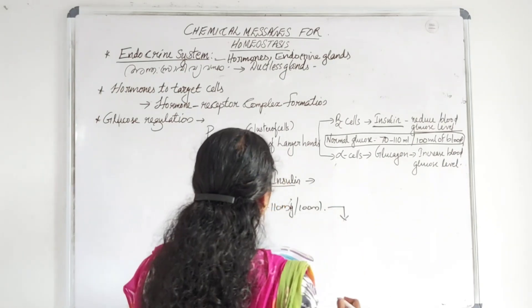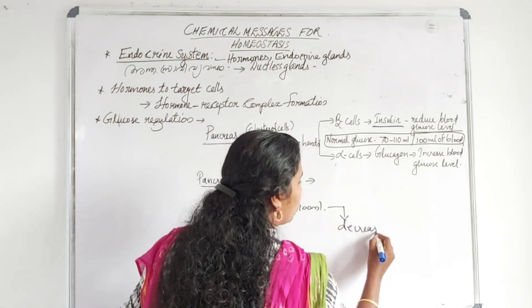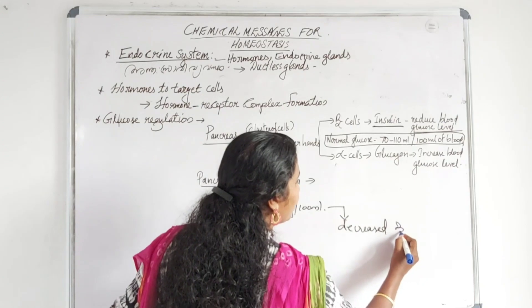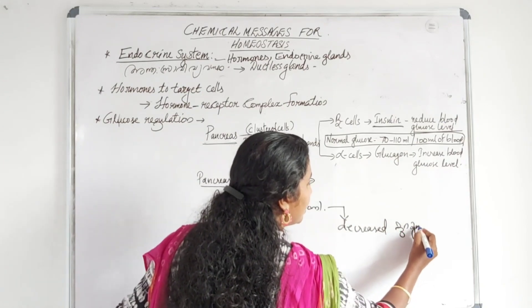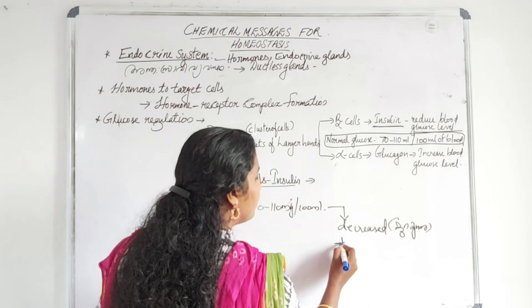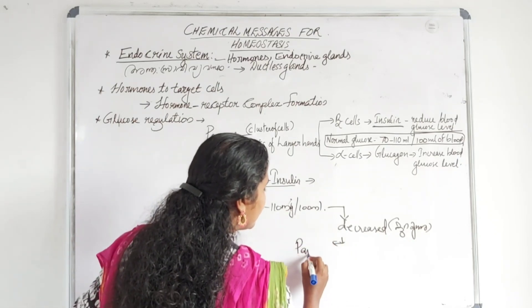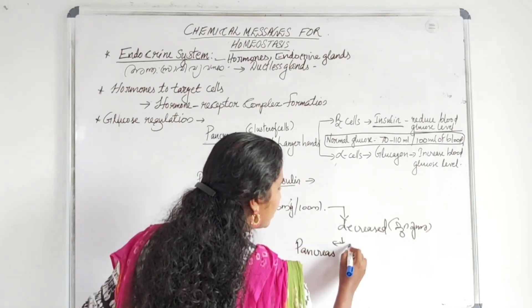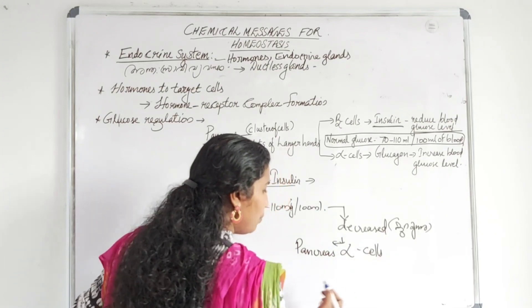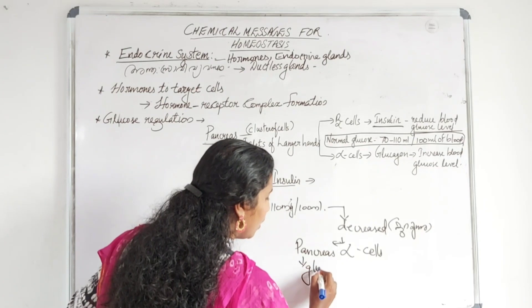If the glucose level is decreased, the pancreas alpha cells are activated, which produce another hormone called glucagon.